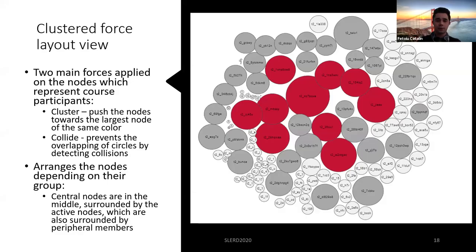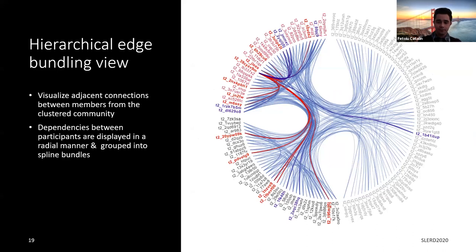The second view is a cluster force layout view, in which all users are grouped together in the same clusters while avoiding overlaps between them. The third type of view presents users in a radial manner — they are arranged on a circle, and various cohesion links between them are shown.